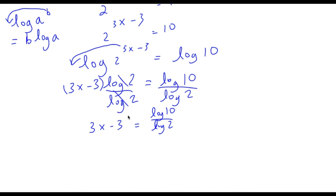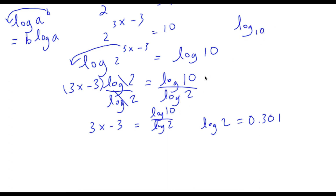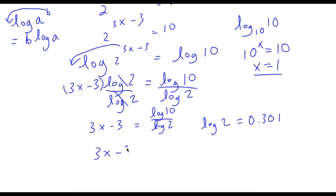Now, log 2 is equal to approximately 0.301. And log 10 equals 1, because any logarithm by default has a base of 10, so log base 10 of 10 asks: 10 to what power equals 10? The answer is 1. So log 10 equals 1, and log 2 equals 0.301.